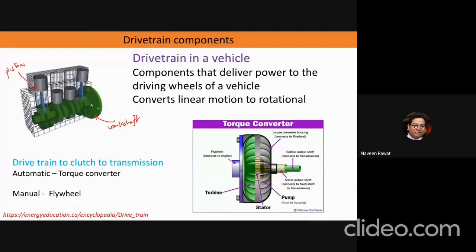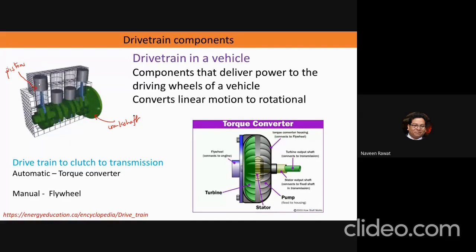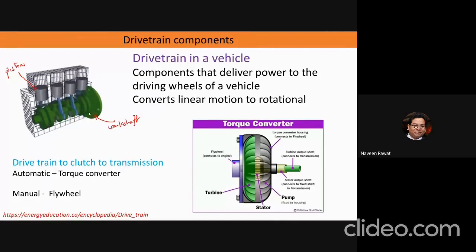In your typical vehicle, the engine is doing a two-stroke or four-stroke cycle, and from that cycle power is generated. That power has to be transferred to the transmission. The way the transmission happens is these pistons that are moving are connected to a crankshaft, and here your linear motion gets converted into rotational motion. Once this crankshaft has started rotating,